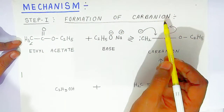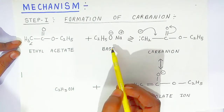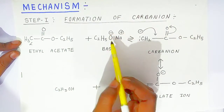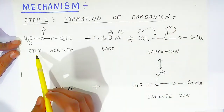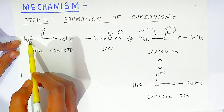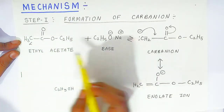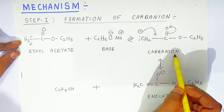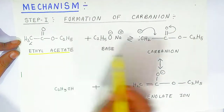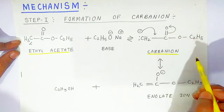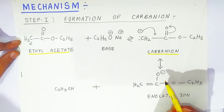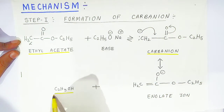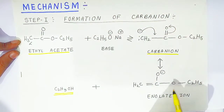Now for the mechanism: in the first step, a carbanion is formed from ethyl acetate in the presence of base. The alpha hydrogen of ethyl acetate is abstracted by the base, forming a carbanion. This carbanion then forms a resonating structure — the enolate ion — where the oxygen carries a negative charge, with elimination of ethyl alcohol.